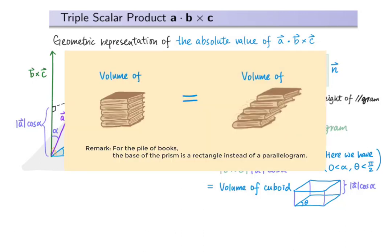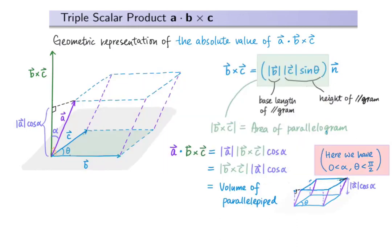What's more, we notice that the volume of the cuboid is also equal to the volume of an inclined prism with the same base and the same height, similar to the fact that the volume of two piles of books are the same. Therefore, in our illustration, A dot B cross C also represents the volume of this solid. It's a solid with six parallelogram faces. It's called a parallelepiped.